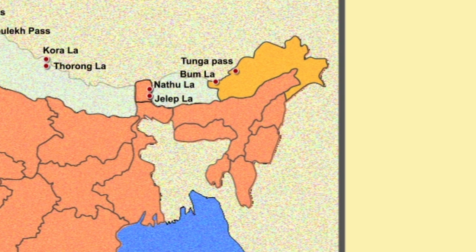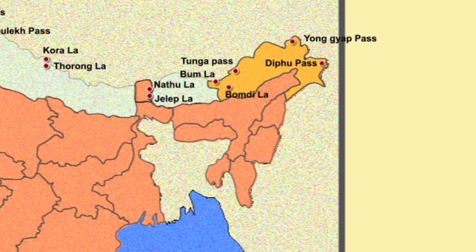The next one is Bumdi La Pass. Then Yong Yap Pass. Then Deepu Pass, which is a mountain pass around the area of the disputed tri-point borders of India, China, and Myanmar.